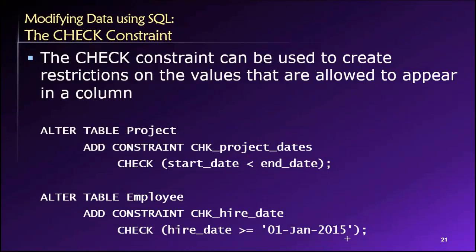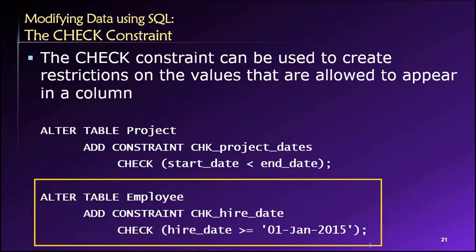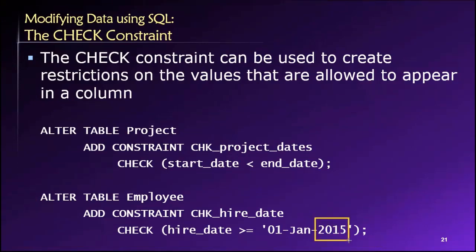If we imagine a scenario where maybe we started our company on the 1st of January 2015, then a check constraint like this would make a lot of sense, because it wouldn't be feasible to hire someone before the company existed. So if we have this check constraint in place and we hire a new person and we're entering 2022 for their hire date but someone accidentally types 2011, this check constraint would catch that error. The person trying to save the invalid hire date would get an error message. You can imagine all kinds of uses for these types of check constraints — they're very useful for ensuring that the data being added to the tables fall within an acceptable, logical, or meaningful range.